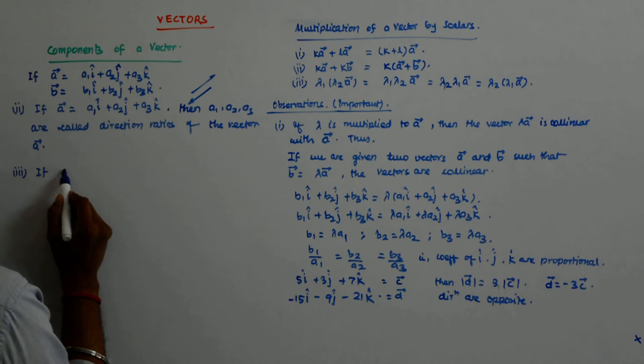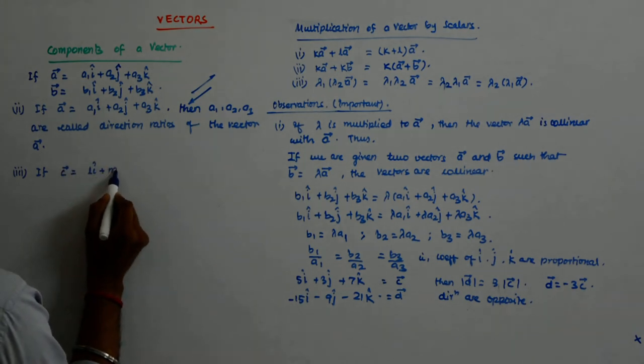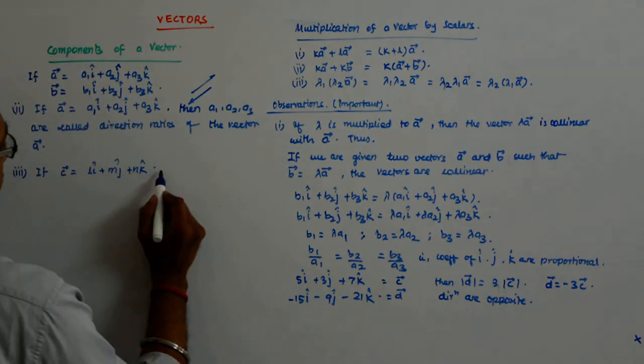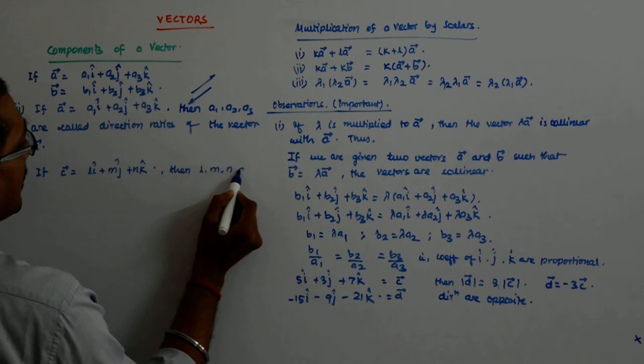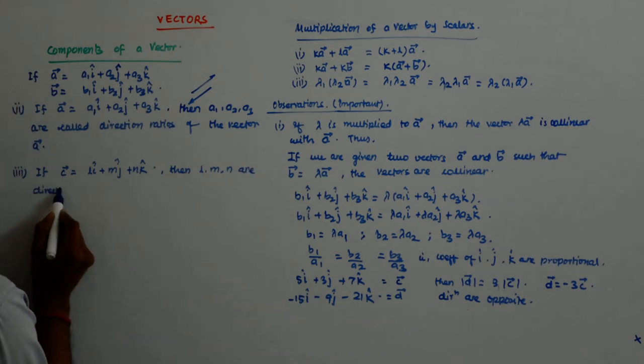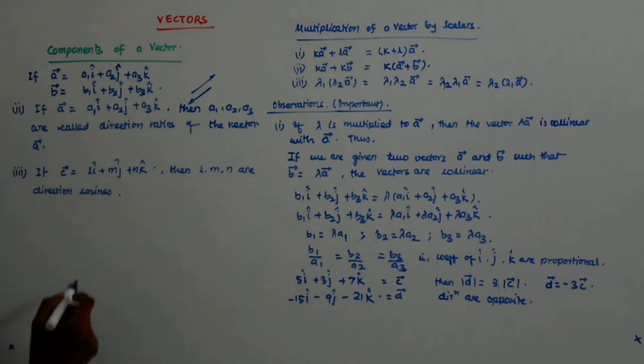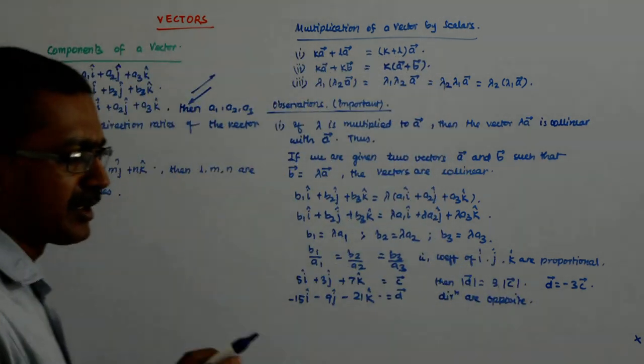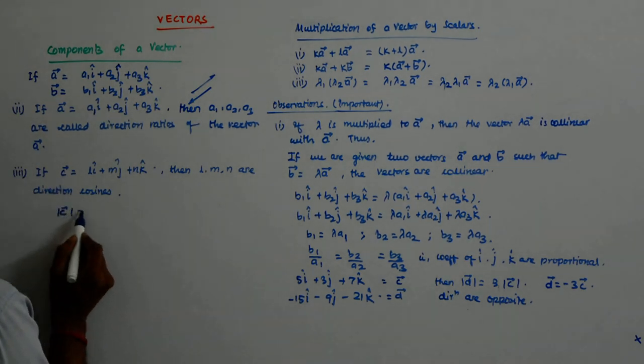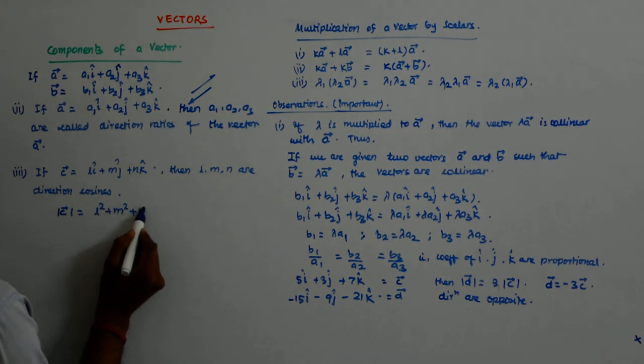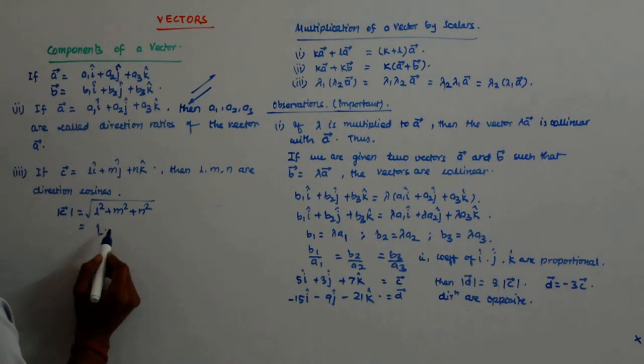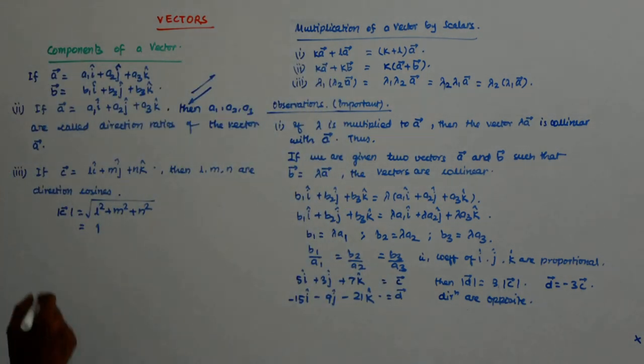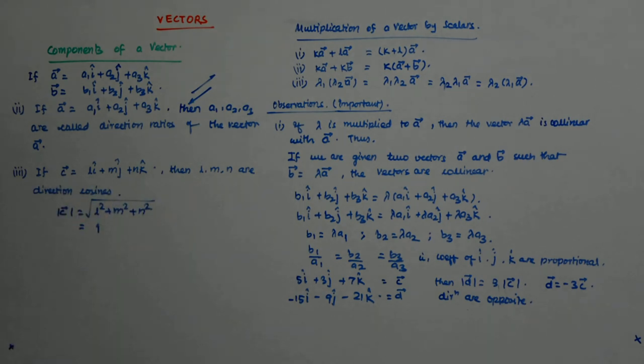If another vector, c, is given by l i cap plus m j cap plus n k cap, then l m n are direction cosines. Now, you will wonder, how do I know whether it is l m n or it is a, b, c? That will mean, by one property of l m n, what will be mod c? That will be 1. So, that means, this is a unit vector.